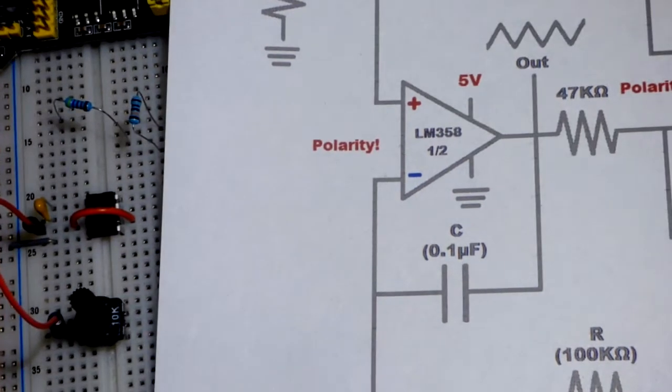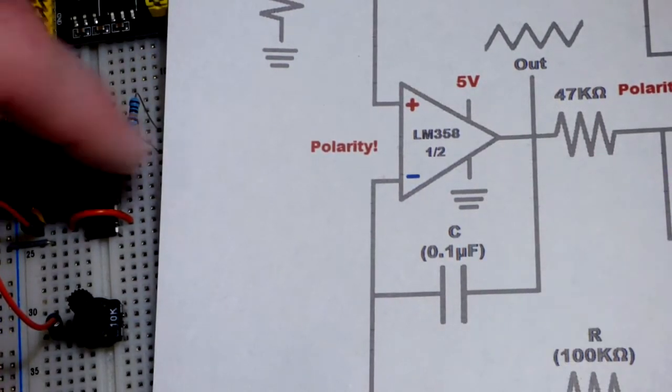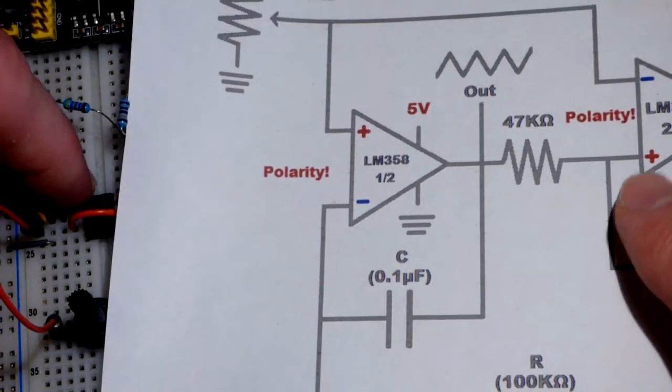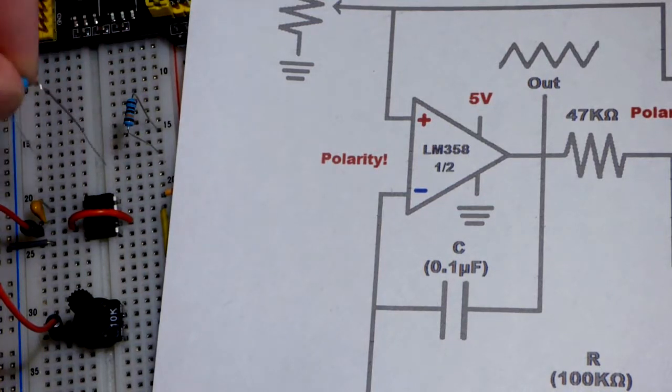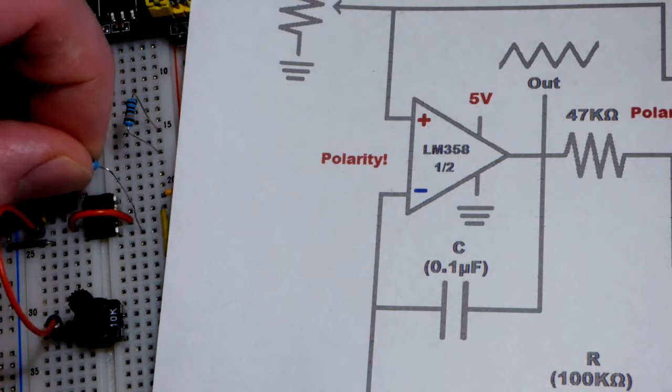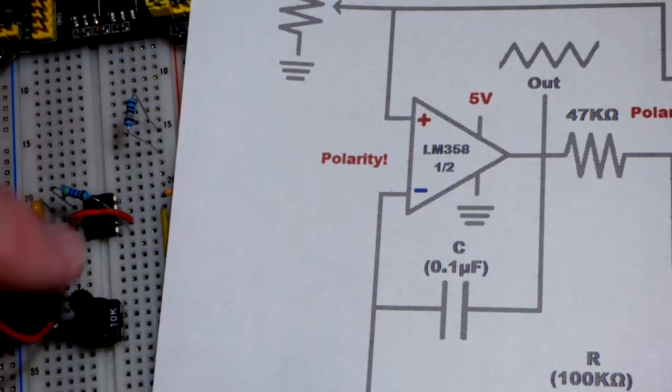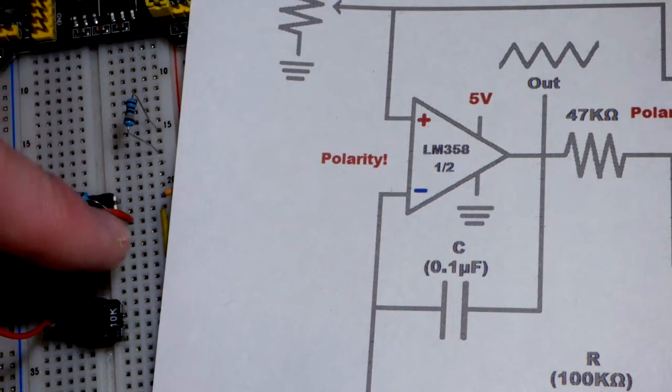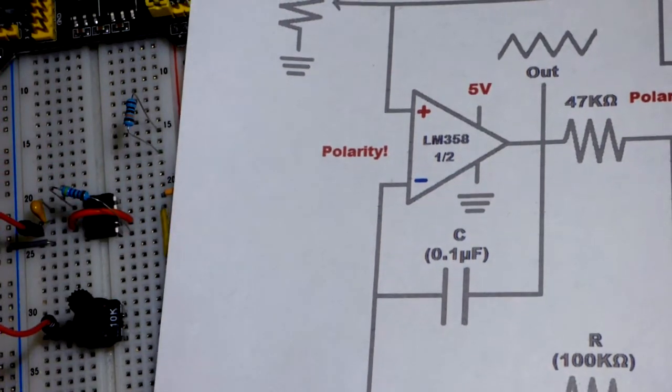Now we have the output, the top pin, pin one there, because that's the first op-amp going to the non-inverting input of the other op-amp. That is a 47 kilohm resistor. So top pin there, and that's going to the bottom pin down here because that is the non-inverting. We got output, inverting where that jumper is, non-inverting down there.